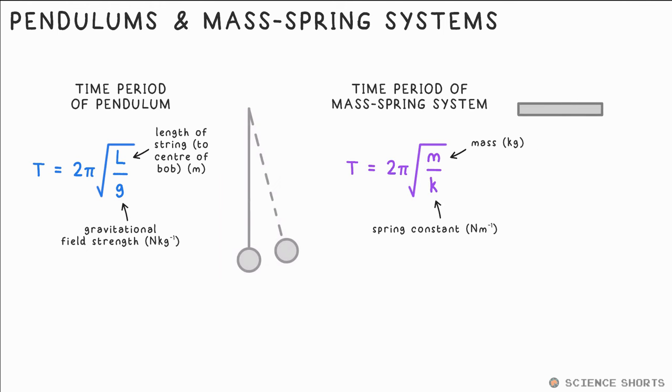For a spring, T equals 2π root M over K, where K is the spring constant. These equations often crop up in proportionality multiple choice questions. For example, what would happen to the frequency of a pendulum if you doubled the length? Well, the time period would go up by a factor of root 2, which means the frequency would do the opposite.